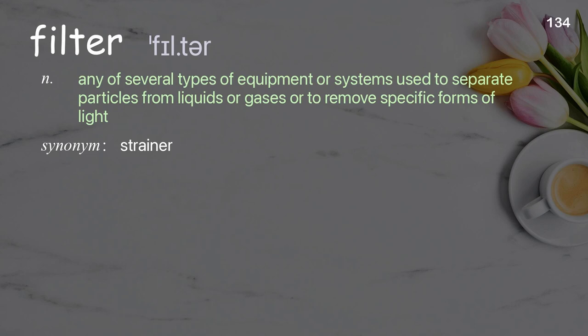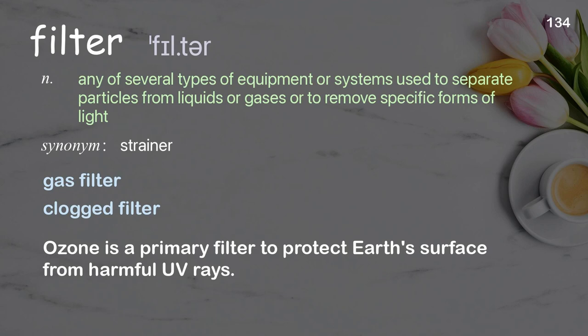Filter: Any of several types of equipment or systems used to separate particles from liquids or gases or to remove specific forms of light. Examples: gas filter, clogged filter. Ozone is a primary filter to protect Earth's surface from harmful UV rays.